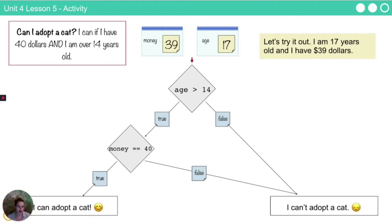I can take those values and input them in my first Boolean expression. My age is 17, which is greater than 14. That is a true statement, so I'm going to follow this path.